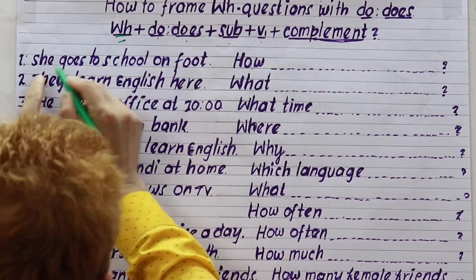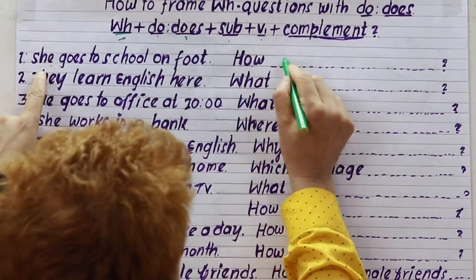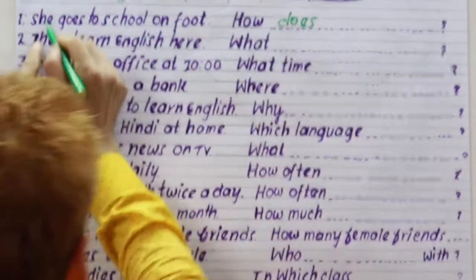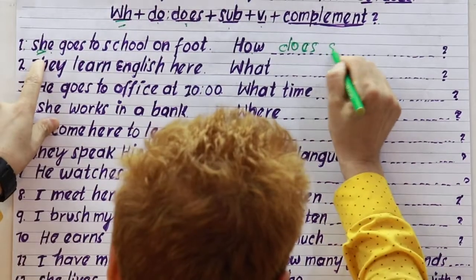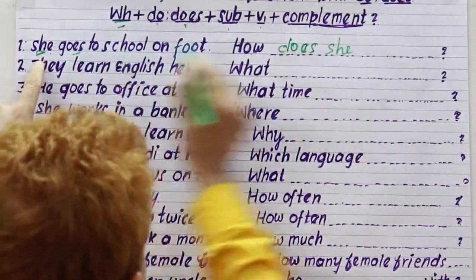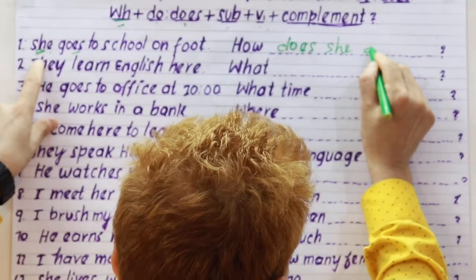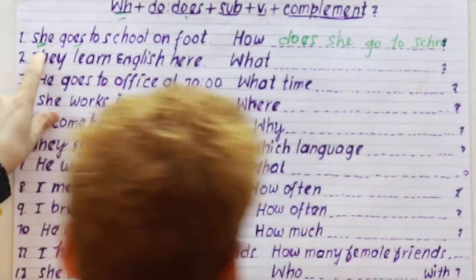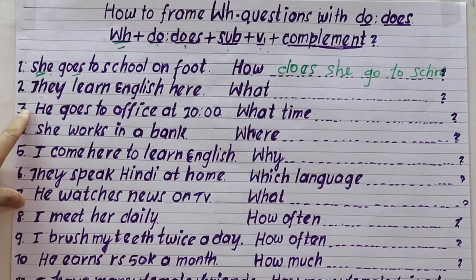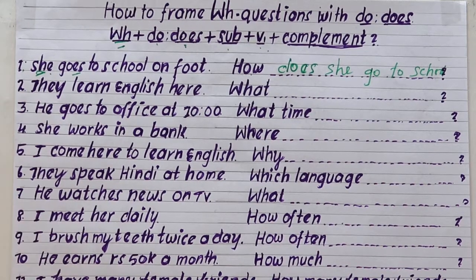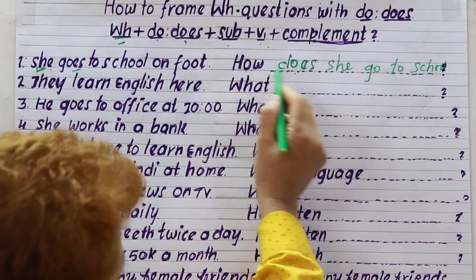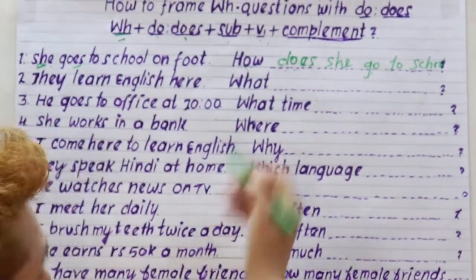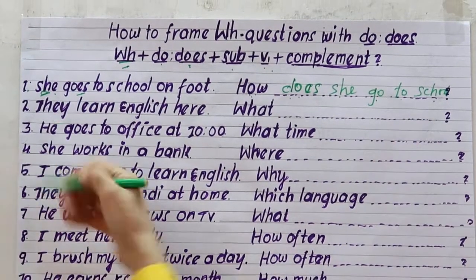How? She is the subject, so I call does. How does she — the verb becomes go, not goes. So the question is: How does she go to school? Answer: She goes to school on foot.